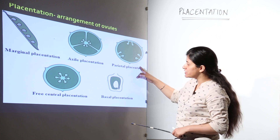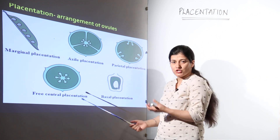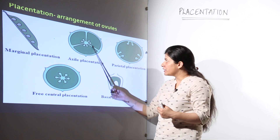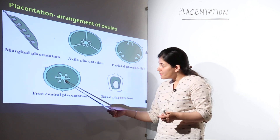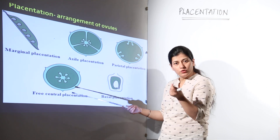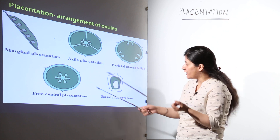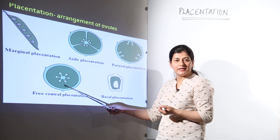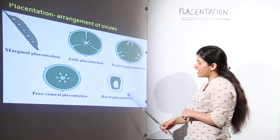Free central placentation will not have any axis specifically created by septa or locules, but the arrangement of all the ovules will be in the central part — a central cushiony part over which all the ovules are attached — and that is known as free central placentation.